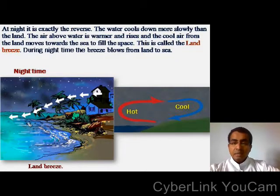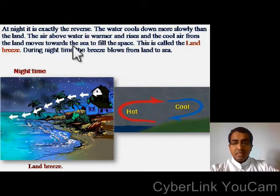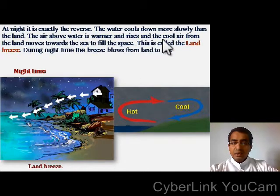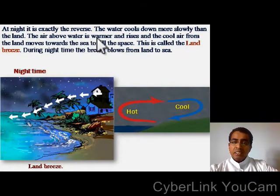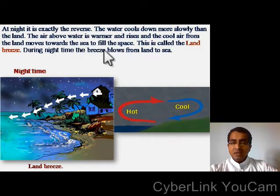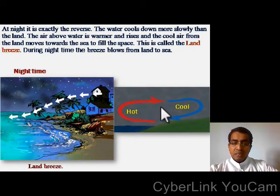Next is land breeze. At night time, it is exactly the reverse. The water cools down more slowly than the land, so the air above water is warmer and rises, and the cool air from the land moves towards the sea to fill the space. During night time, the breeze blows from land to sea. This is called land breeze.